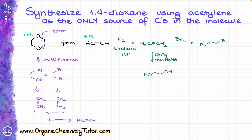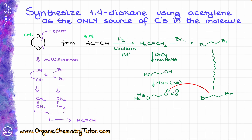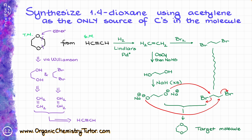Then we're going to take our diol and treat it with excess of a strong base like sodium amide, or better yet sodium hydride, which is going to give me the corresponding alkoxide with two negatively charged oxygens. Finally, I'm going to take my doubly charged alkoxide and treat it with my dihalide to build the final molecule and close it up into a cycle. That is going to be a sequence of two SN2 steps, where the first oxygen displaces one bromine, and then the second oxygen displaces the other bromine, giving us our final product — pretty easy and straightforward.